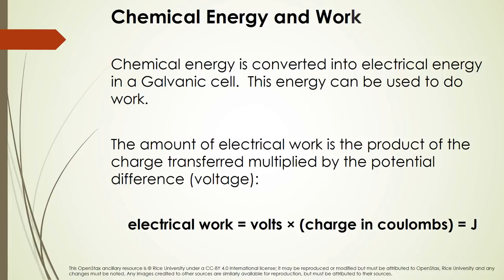Chemical energy is converted into electrical energy in a galvanic cell, and that happens spontaneously — we can use this energy to do work. The amount of electrical work is the product of the charge transferred multiplied by the potential difference, or the voltage. Electrical work equals volts times charge in coulombs, giving us joules, which is an energy unit.